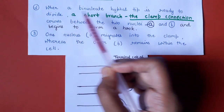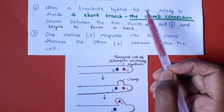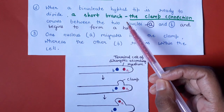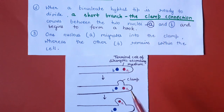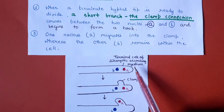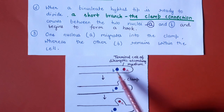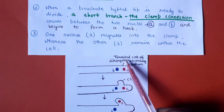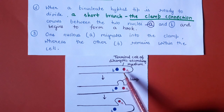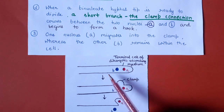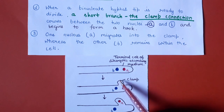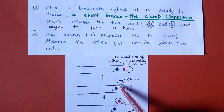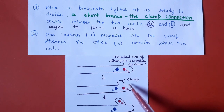When a binucleate hyphal tip is ready to divide, a short branch called a clamp connection or clamp arises between the two nuclei. This happens in the terminal cell of the secondary mycelium — when the secondary mycelium divides, a clamp-like structure develops between the two nuclei, mostly in the terminal cell.